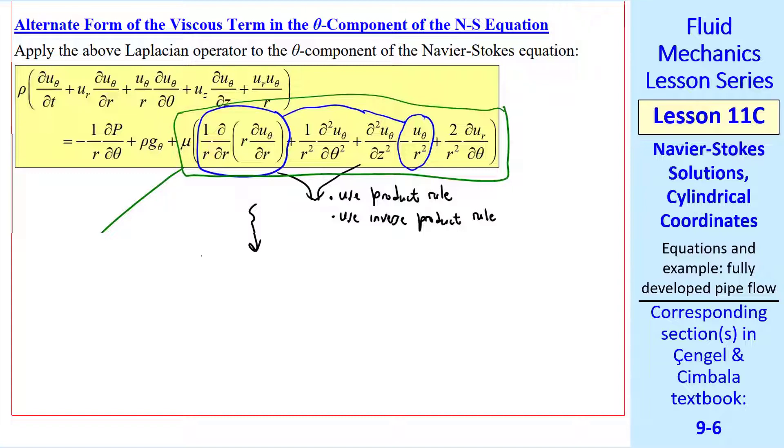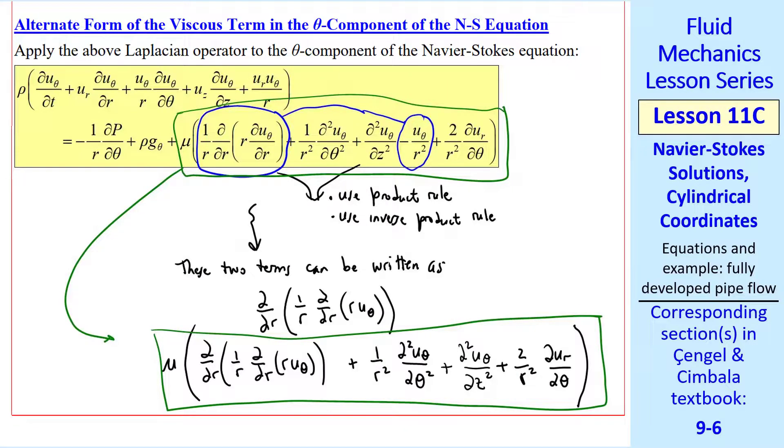After a little bit of algebra, these two terms can be written as d/dr(1/r d/dr(ruθ)). So these viscous terms can be written alternately as this term, which includes these two, and then the other three. So all these terms within the green box can be written as these terms instead.